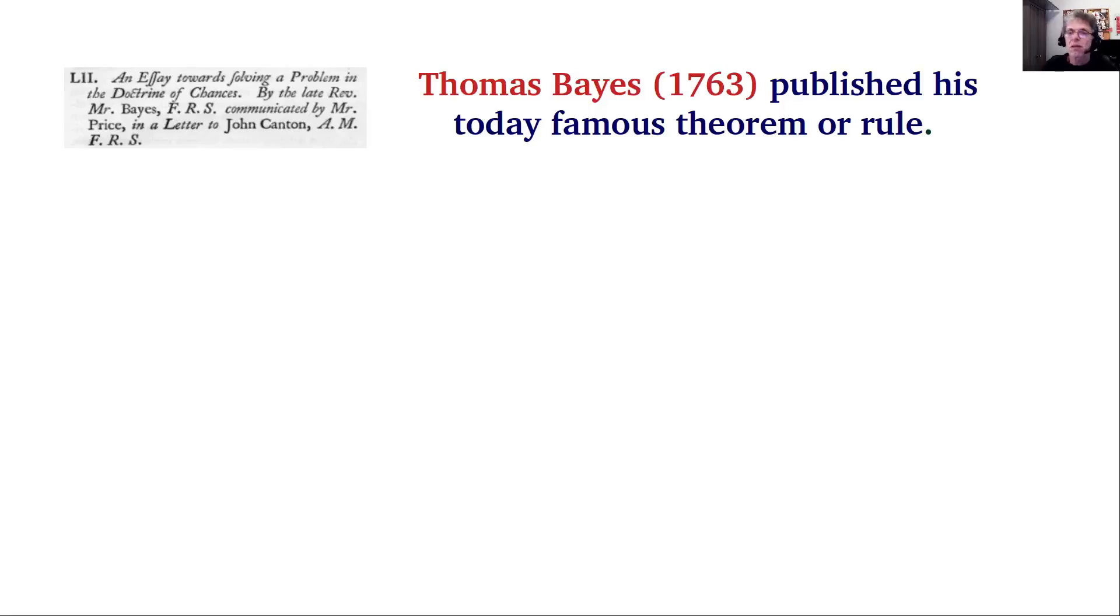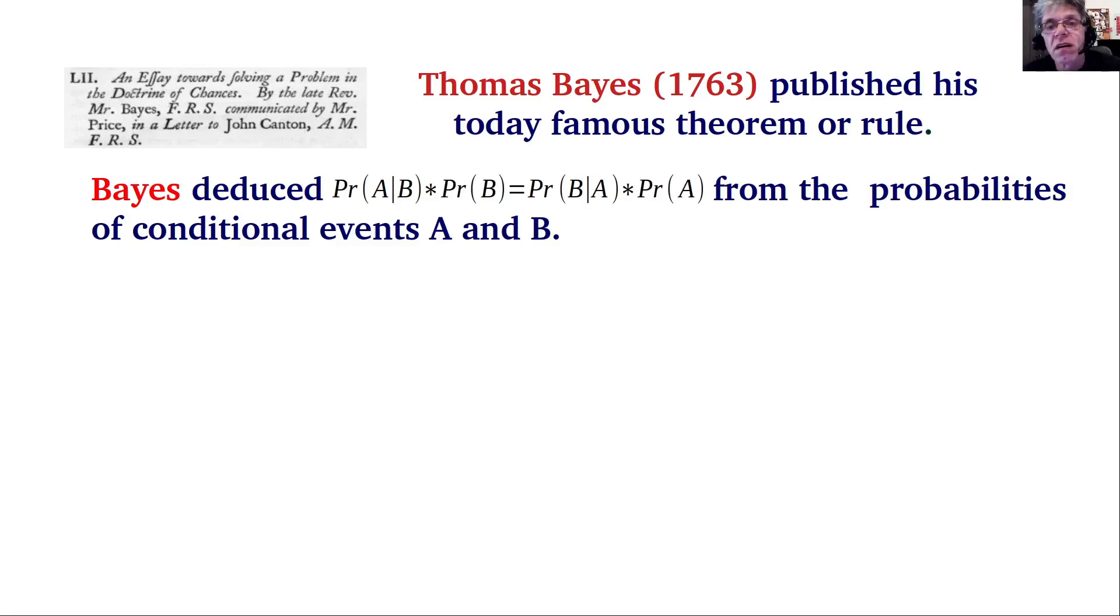In 1763, Thomas Bayes published his now famous theorem or rule. This paper was published posthumously, communicated by Richard Price, a personal friend of Bayes, who is suspected to have much improved the papers of his deceased friend. Bayes' rule simply says that the probability of event A given that event B has occurred times the probability of event B equals the probability of event B given that event A has occurred times the probability of event A. This is a non-controversial statement deduced simply from the probabilities of conditional events A and B.